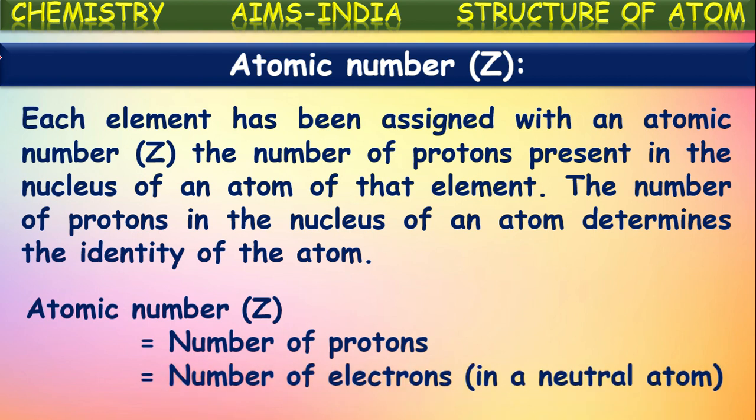Atomic number Z is also equal to number of electrons if the atom is neutral. Normal atoms are neutral atoms — they contain equal number of protons and electrons. Hence we can say atomic number is equal to number of protons as well as number of electrons. But in case of ions, atomic number cannot be taken as number of electrons. Always atomic number will be equal to number of protons because even if it is an atom or ion, number of protons won't be changed as they exist inside the nucleus.